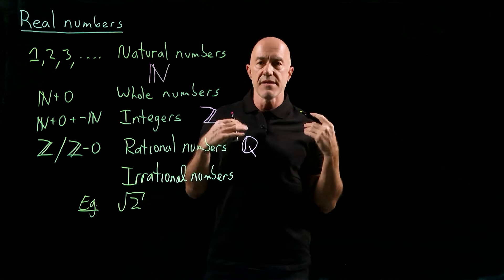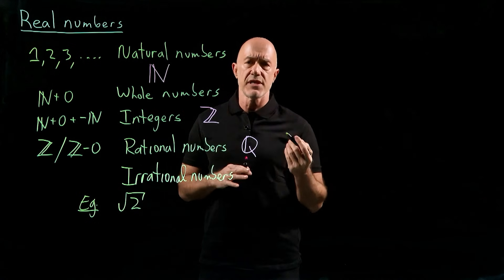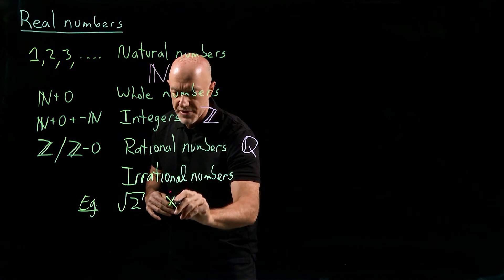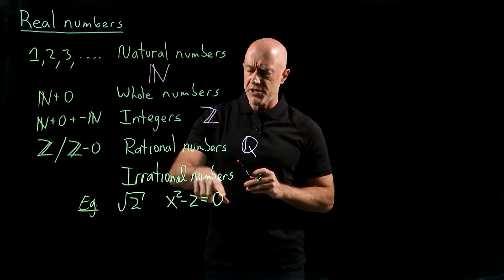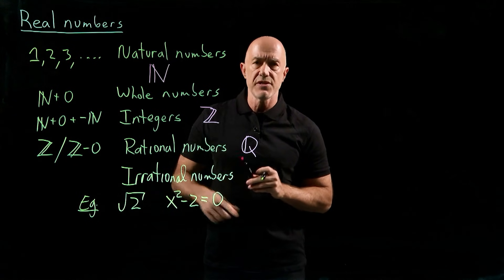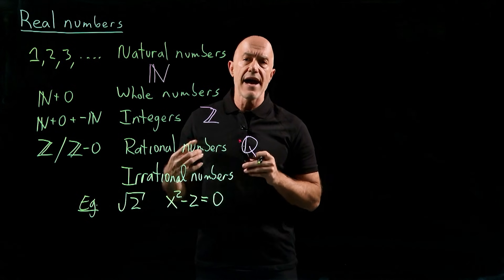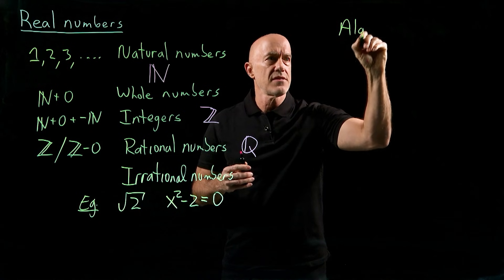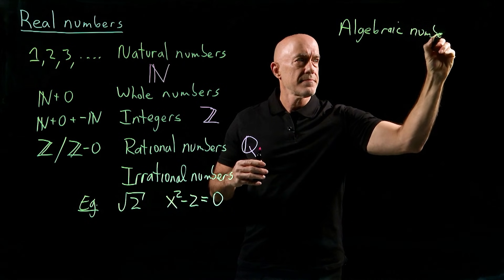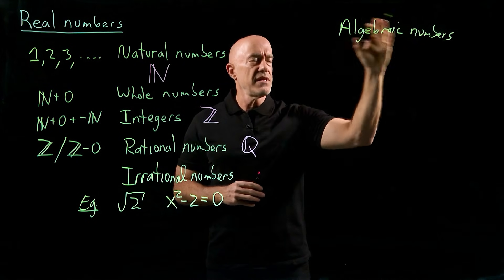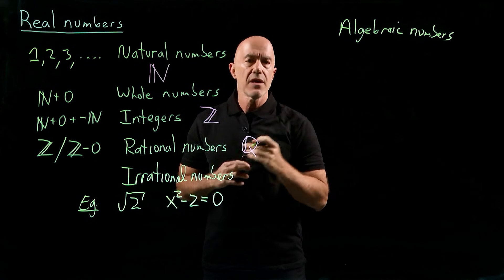There's a very nice, very old proof that the square root of 2 is irrational. The square root of 2 is a solution of a polynomial equation — particularly x squared minus 2 equals 0. So all the solutions of these types of polynomial equations, what we call the roots of polynomials, are called algebraic numbers. These are all the numbers that can be written as the roots of polynomials with integer coefficients.